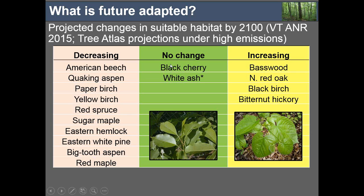Nonetheless, some species in that forest type like black cherry are projected not to change. White ash under climate alone is not projected to change — though obviously there are many other things white ash has to worry about. And certain species like basswood, northern red oak, black birch, and bitternut hickory are expected under projected climate change to actually increase in suitable habitat across the landscape. This is not saying they're going to migrate — just that a seed falling in a certain place might have a higher probability of establishing and growing in 100 years than it does today.